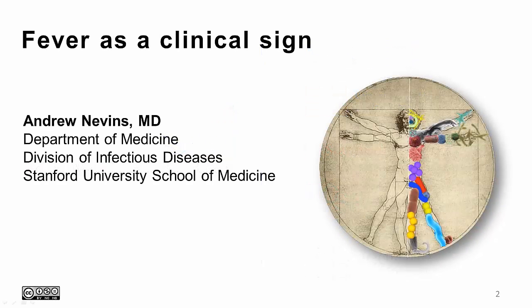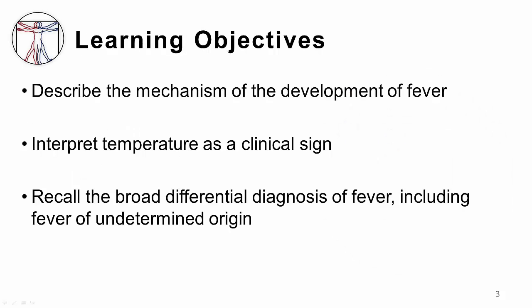Hi, my name is Andrew Nevins. I'm with the Division of Infectious Diseases at Stanford University School of Medicine, and in this video I'll be talking about fever as a clinical sign. The learning objectives for this video are to describe the mechanism of the development of fever, interpret temperature as a clinical sign, and to recall the broad differential diagnosis of fever, including fever of undetermined origin.